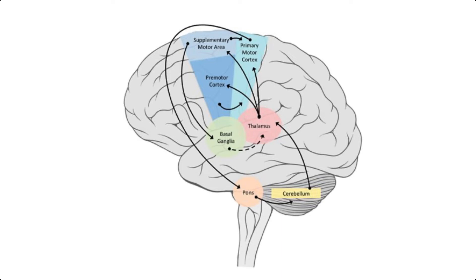There is debate regarding where exactly procedural memories are stored in the brain. However, a strengthening of connections between neurons in the brain regions previously mentioned is known to occur, especially between the motor cortices of the frontal lobe and the basal ganglia.